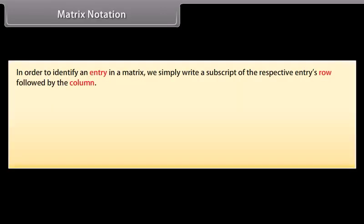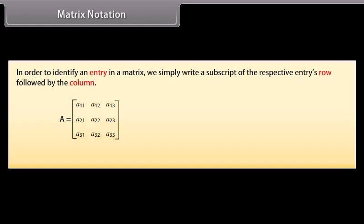Matrix notation. In order to identify an entry in a matrix, we simply write a subscript of the respective entry's row followed by the column. In matrix A, we write A₂₃ to denote the entry in the second row and the third column. A₂₃ indicates row number 2 and column number 3.